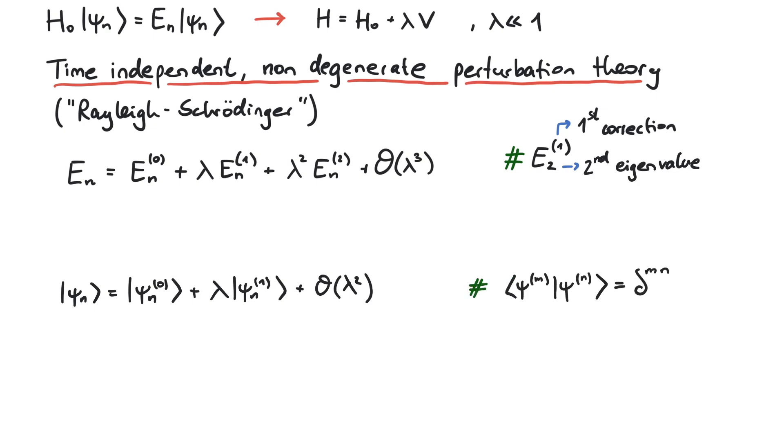Now, all we need is to know how to calculate these corrections. Usually, we calculate the energy up to second order, and the eigenfunctions up to first order.